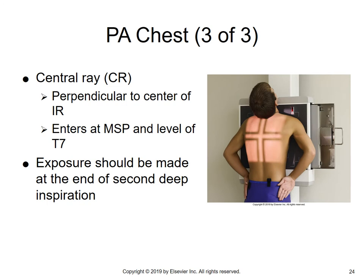The central ray is perpendicular to the center of the IR. To be sure of placement, palpate the tips of the scapulae — when the patient rolls their shoulders forward, you can feel the very tips, which come down like a little triangle. At the very tip, you'll be at the level of thoracic vertebrae T7. So the central ray location for a PA chest is the MSP at the level of T7. Exposure should be made at the end of the second deep inspiration: take a deep breath, blow all the air out, take another deep breath, and hold it.